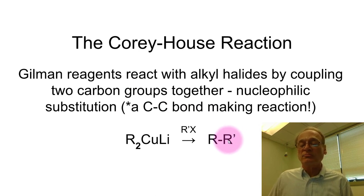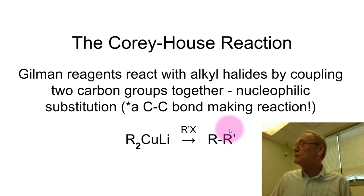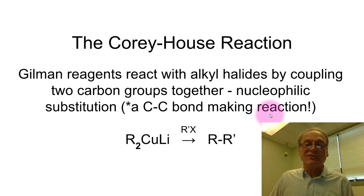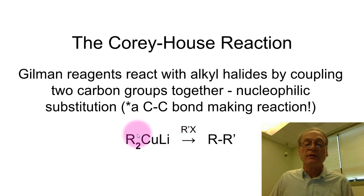If these are just two regular alkyl groups, the product would be an alkane, and making alkanes is not all that useful because typically we don't use them for much except burning them. But it is useful because both R groups can have other functionalities within them.